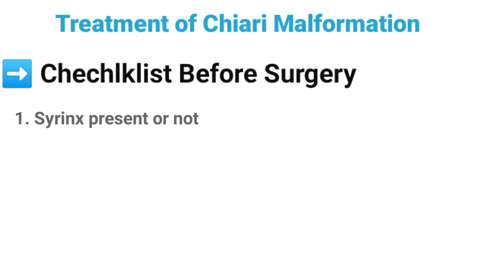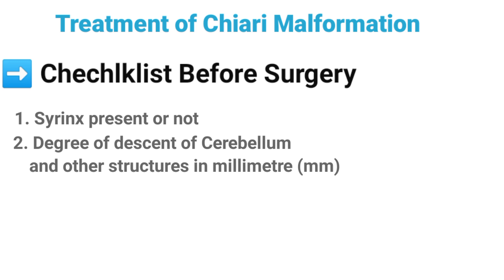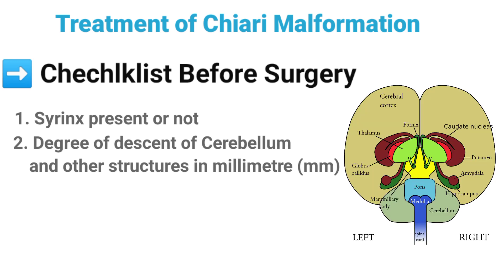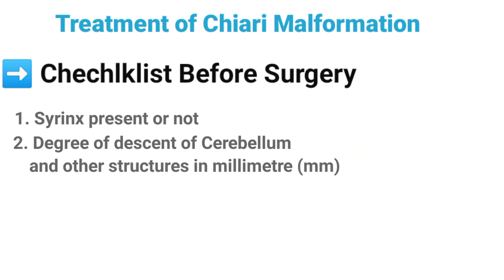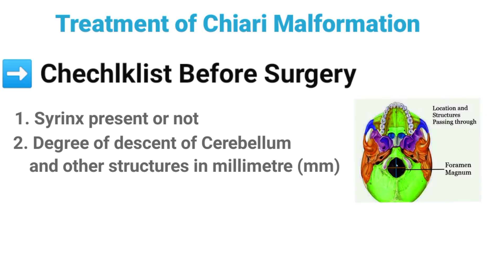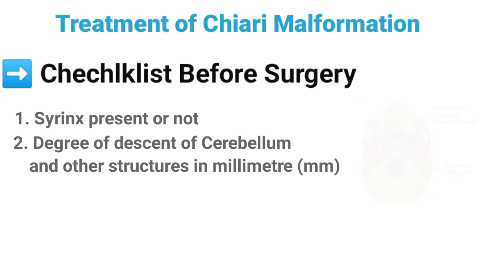On number two, we have to see the degree of descent of different structures. These can be cerebellar tonsils, cerebellar vermis, brainstem, or different ventricles. We measure the descent in millimeters from the foramen magnum, and for this we had advised MRI of the patient.